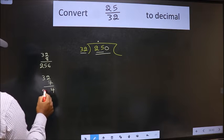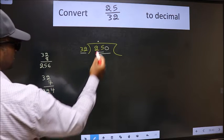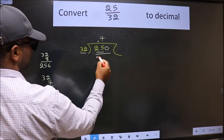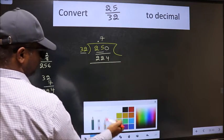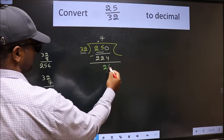7 times 2 is 14, 7 times 3 is 21. So 7 gives 224. Now we should subtract. We get 26.